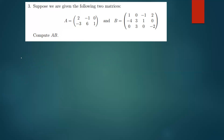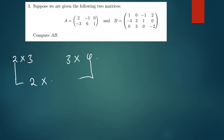Before finding the solution, we need to know what size the result matrix will be. Matrix A is a 2×3 matrix — two rows and three columns. Matrix B is a 3×4 matrix. So the result is going to be a 2×4 matrix. Let's now find the product of these two matrices.